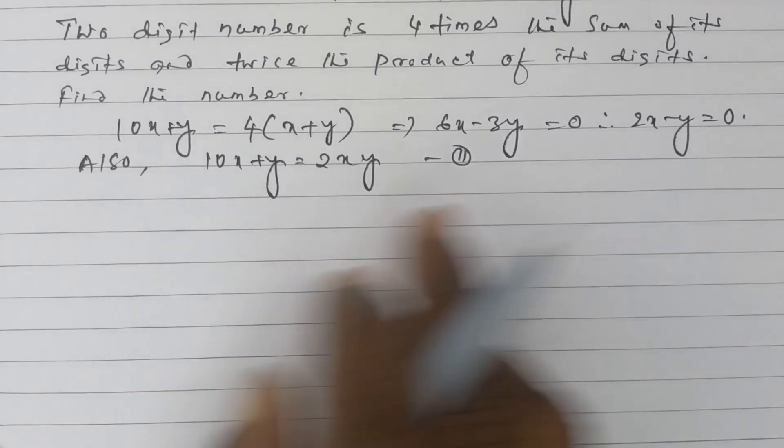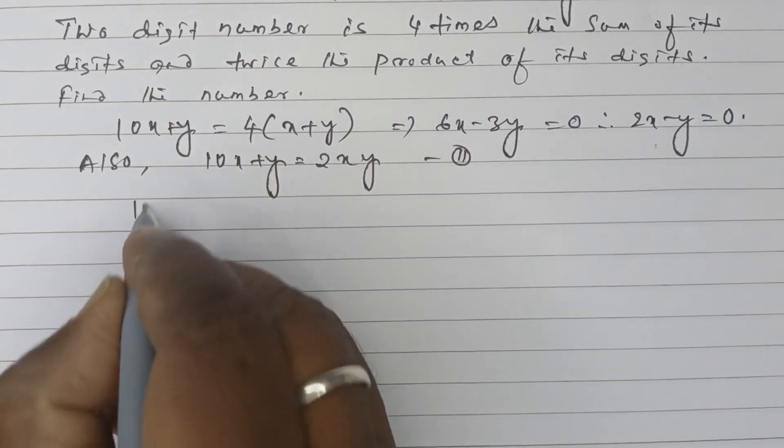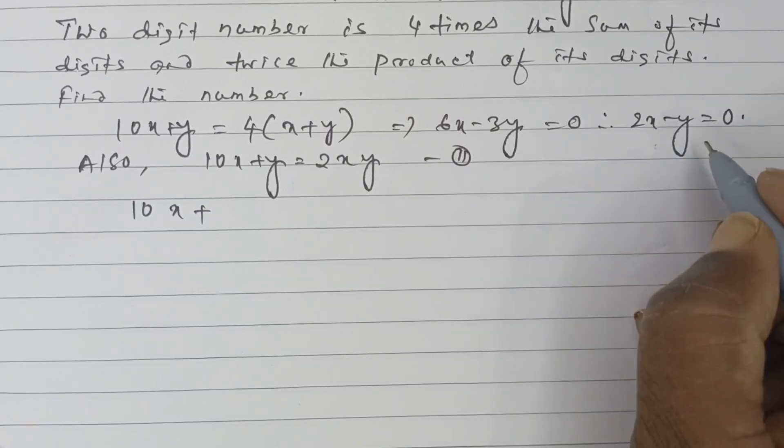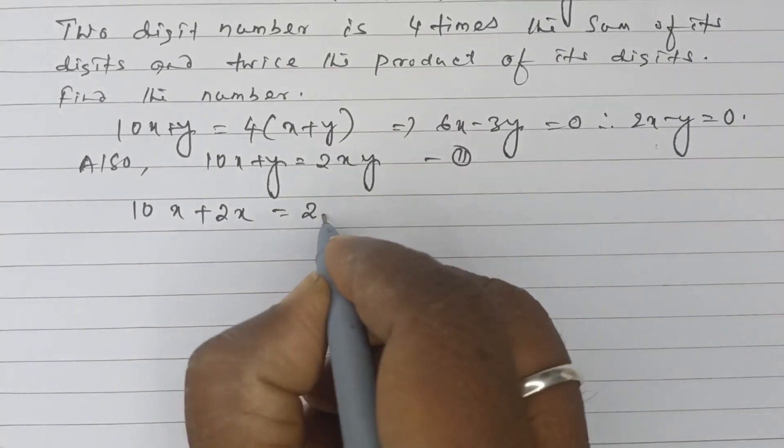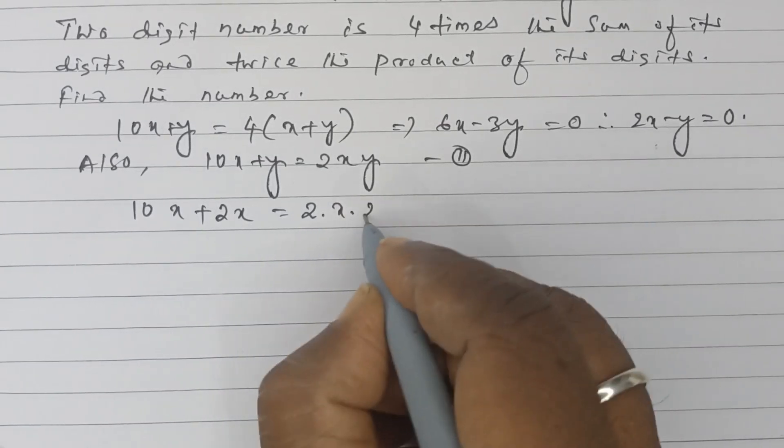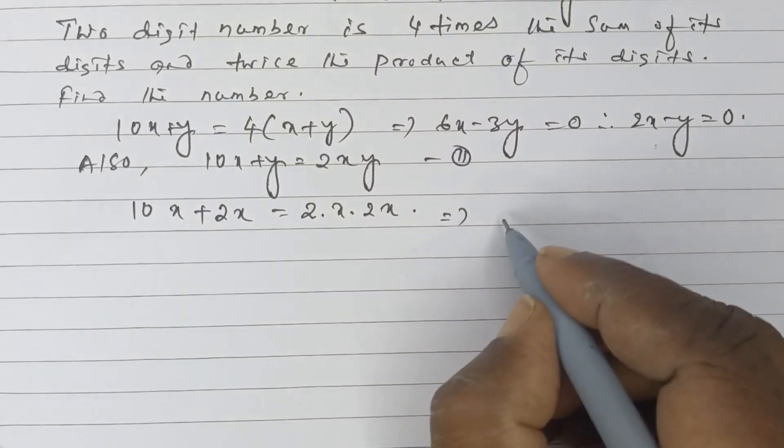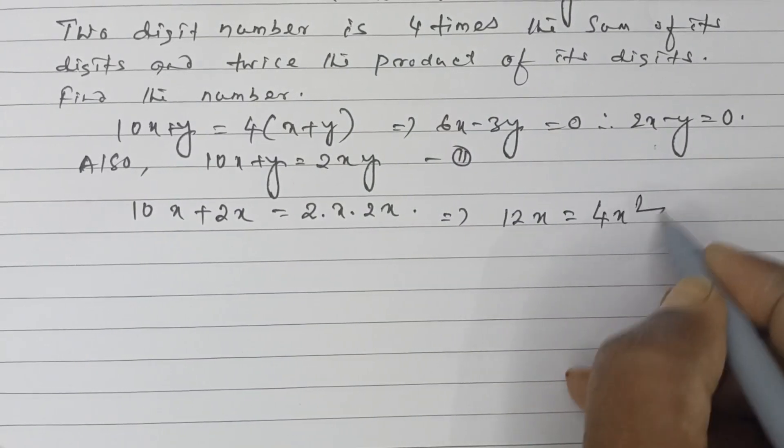Now putting the value from the first equation into the second, and substituting y = 2x, we get 12x = 4x², so 4x = 12.